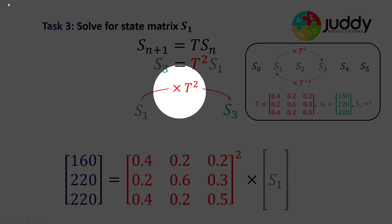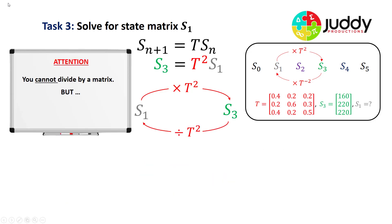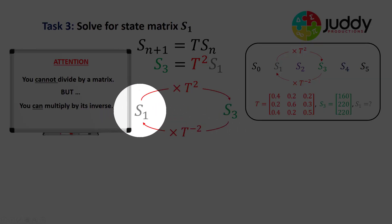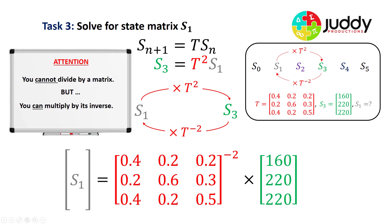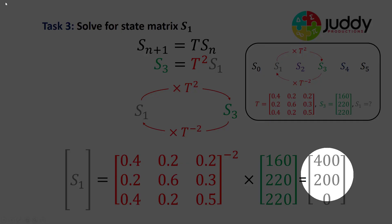We wish to calculate S1, the first state. Instead of multiplying by the transition matrix squared, we do the reverse and divide by the transition squared — but as we recalled, you can't divide by a matrix; however, you can multiply by its inverse. So to transition from S3 to S1, which is two transitions, we multiply by the inverse matrix squared. Inverse matrix squared times S3 gives S1 as 400, 200, and 0 in a 3×1 matrix.